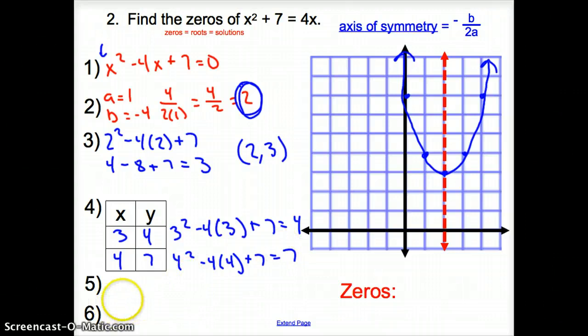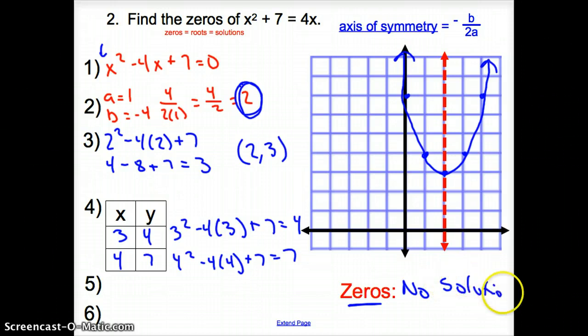Now, do we have any solutions? Do we have any zeros? Well, what are our zeros? They go through the x-intercept. Does it go through this x-intercept? It does not. It goes through the y, but it does not go through the x. So do we have any zeros? No, we do not. We have no solution.